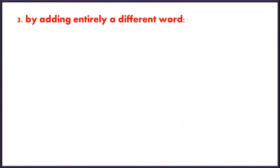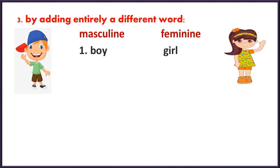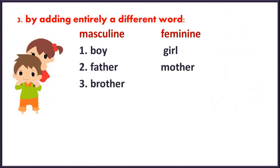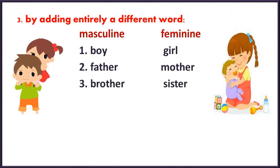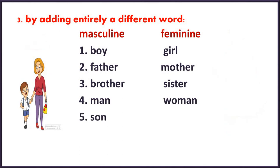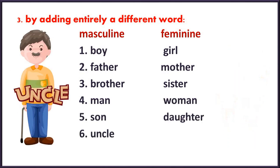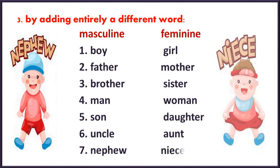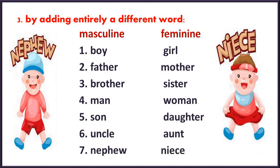Next rule: by adding an entirely different word. Our masculine is totally different from our feminine gender. For example: boy / girl; father / mother; brother / sister. Have you noticed we use an entirely different word for feminine? Man / woman; son / daughter; uncle / aunt; nephew — son of a brother or a sister — becomes niece — daughter of a brother or a sister.